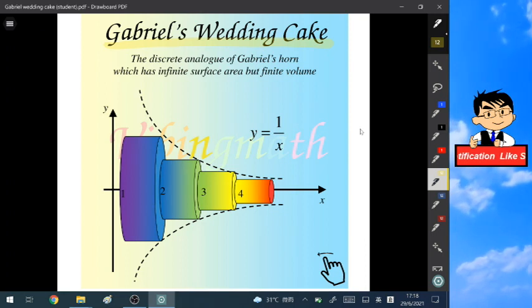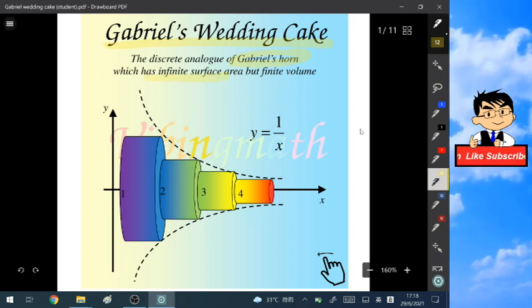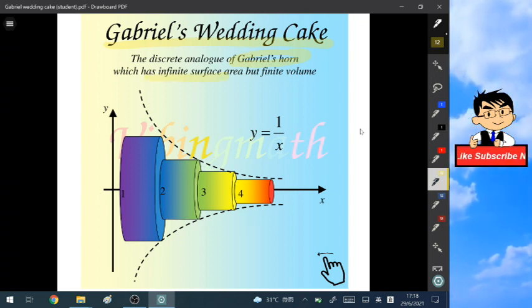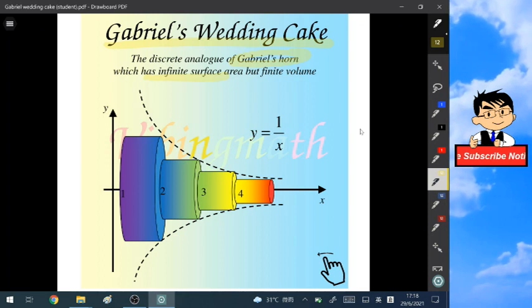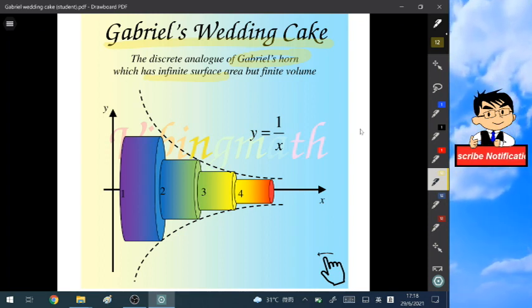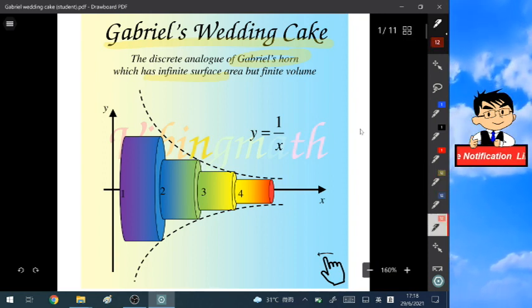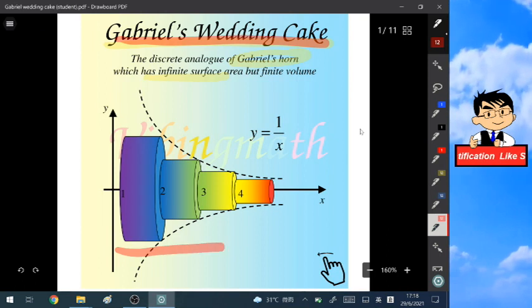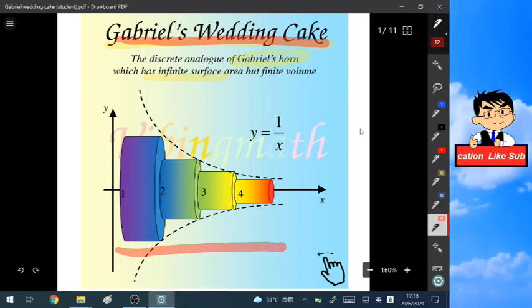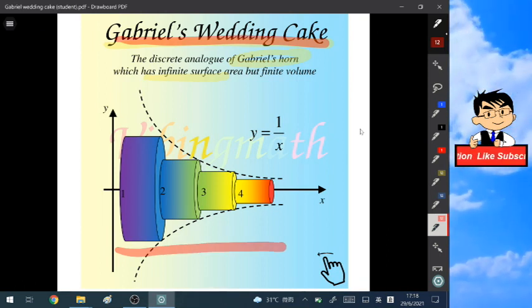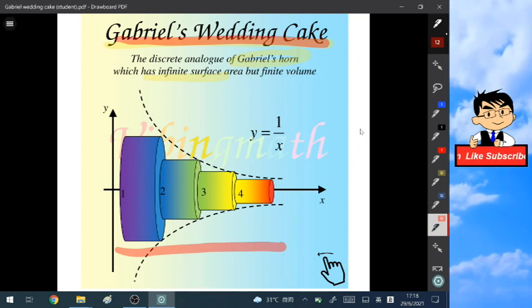You may know that Gabriel's horn is very famous—it has an infinite surface area but a finite volume, which is quite mind blowing. But what about if we have a discrete analog of this Gabriel's horn, which is called Gabriel's wedding cake? As you can see, its shape is like a wedding cake. So let's go ahead and see what this is.